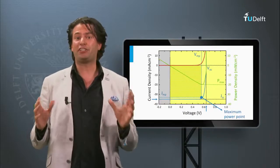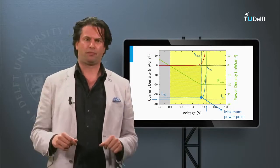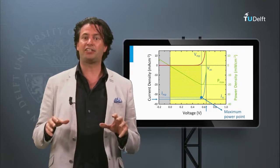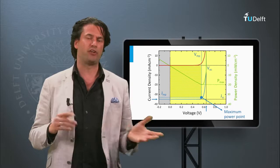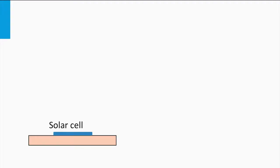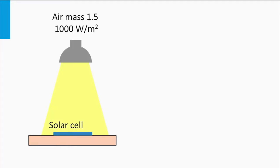We are going to measure the efficiency of a solar panel. We do this by measuring the JV curve and its external parameters as discussed in the previous block. The experimental setup consists of several components. The first component is a solar simulator, which is a light source that simulates both the shape of the AM 1.5 solar spectrum and an irradiance of 1000 W per square meter.